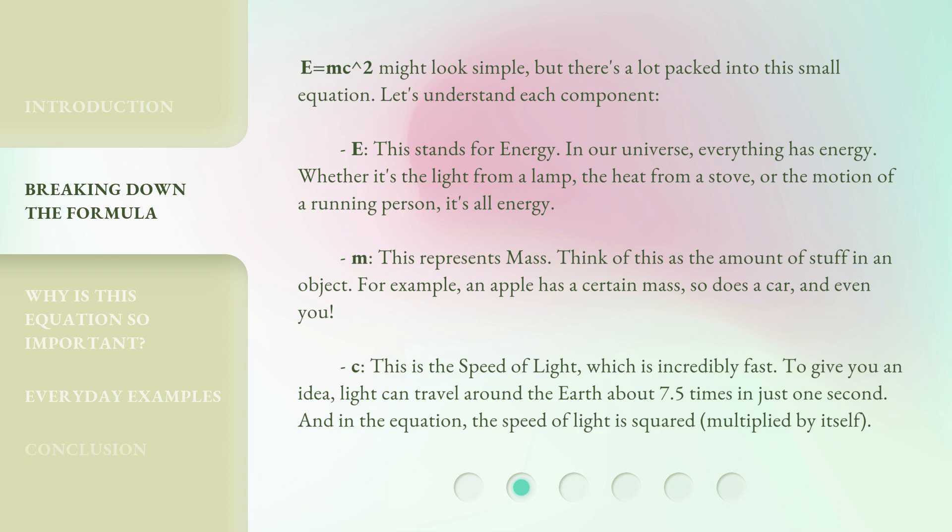C, this is the speed of light, which is incredibly fast. To give you an idea, light can travel around the earth about 7.5 times in just one second. And in the equation, the speed of light is squared, multiplied by itself.